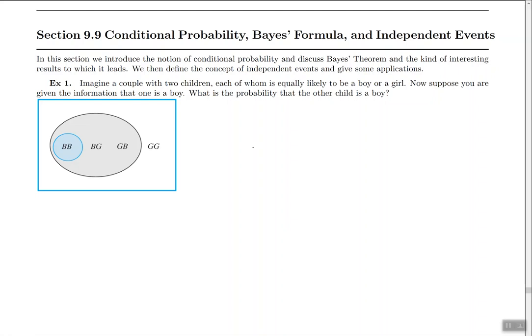So for example when I write something like BG that means that the first child is a boy and the second child is a girl. And as you can see this is all the different combinations of children that we can have.